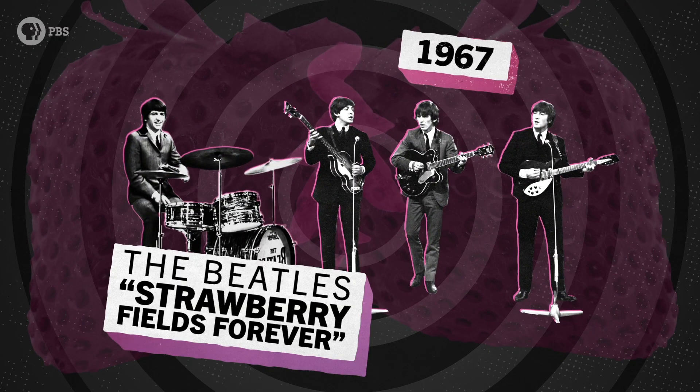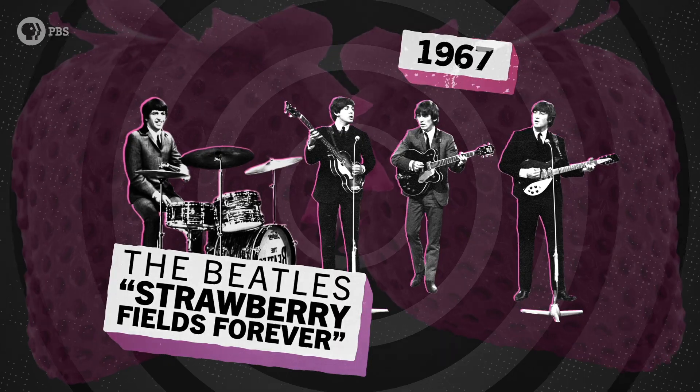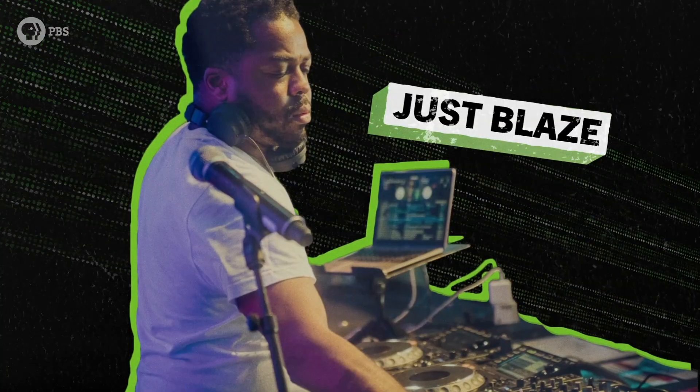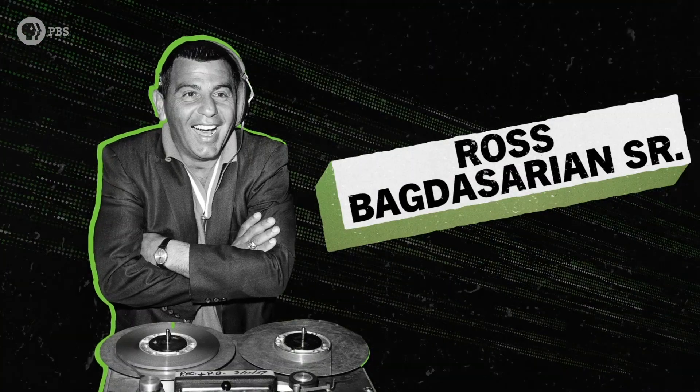You can actually hear where the splice happens — listen to the shift right before John Lennon says 'Going to.' You might have noticed John Lennon's vocal take was slowed down, which is why it sounds dreamier, almost slurred. In more recent years, producers like Kanye and Just Blaze took note from Ross Bagdasarian and sped up soul and R&B samples, adding a new Alvin and the Chipmunks kind of flavor to their beats.